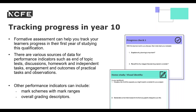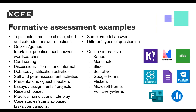Other performance indicators include mark schemes and mark ranges. The range of marks in the mark schemes could also be a performance indicator. For example, as a guide, seven to twelve marks would be a distinction or strong Level 2 merit, four to six marks would be a merit or strong Level 2 pass, and nought to three marks would be in the Level 1 range. Another useful way to track learners' progress is to use the overall grading descriptors in the specification.